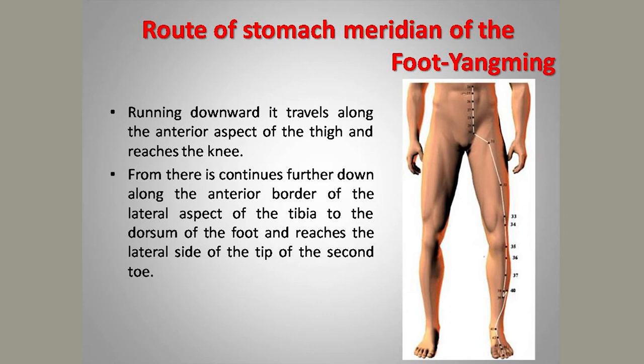At the inguinal region, at the point Stomach 30, both branches unite and run downwards along the anterior lateral aspect of the thigh, anterior lateral aspect of the leg, then the ankle, dorsum of the foot, reaching the lateral aspect of the second toe where the meridian ends. That is the pathway of the stomach meridian.